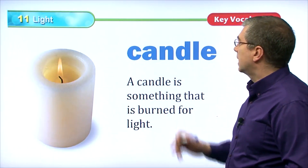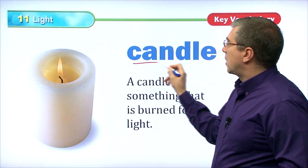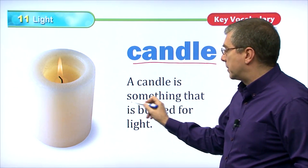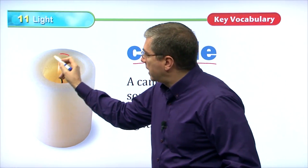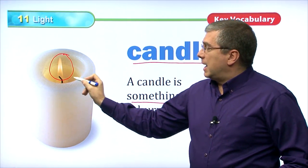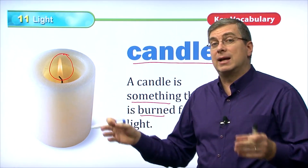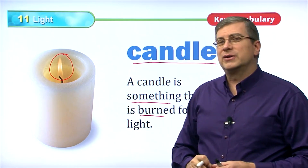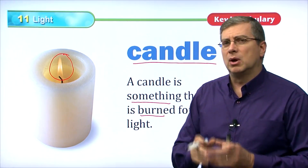If you're outside and it's a very bright day with a lot of sunlight, you might want to wear sunglasses because they protect your eyes from the sun, which is important. Look after your eyes. Where can we get light? Well, one place is from a candle. A candle is an object that is burned for light. This flame is burning the candle. We burn the candle because we want to have light. If we want more light, we burn more candles.